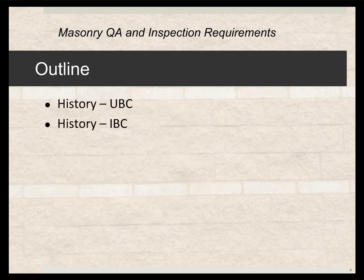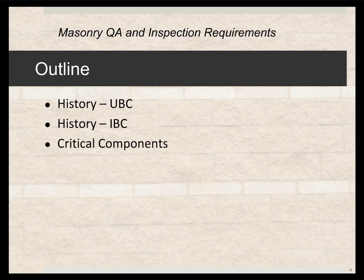The history of quality assurance goes back in the Uniform Building Code to World War II — 1943 to be specific. It then matured into the IBC, the International Building Code, and more recently has been transferred over to the TMS 402 document. TMS stands for The Masonry Society, and it's the same document some people refer to as ACI 530. There's a different story as to why ACI has bowed out and now it's a masonry-only document. The critical components, of course, we want to be aware of so that we can design and ensure our quality assurance program is right.